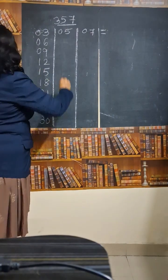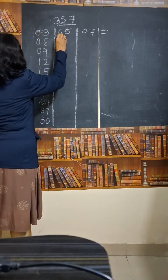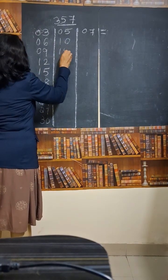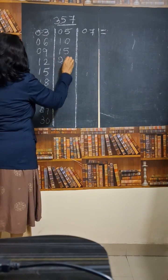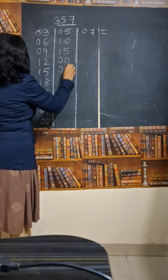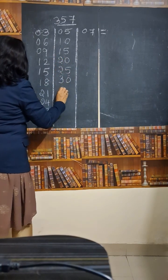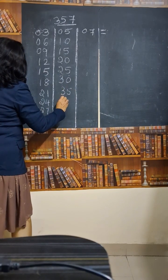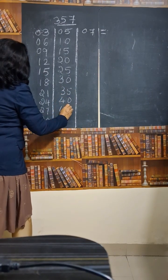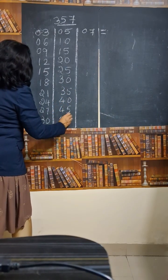So now let us write the tables of 5. 5 1s are 5, 10, 15, 20, 25, 30, 35, 40, 45, 50.